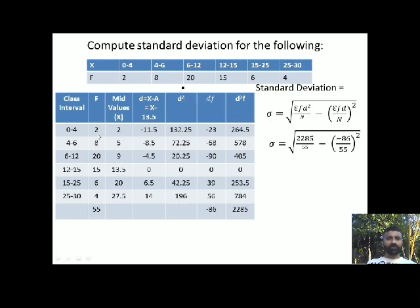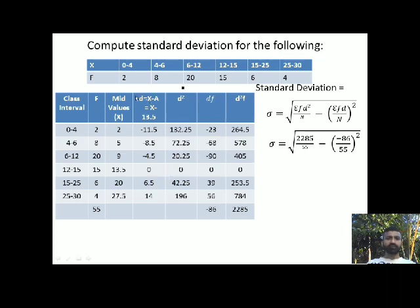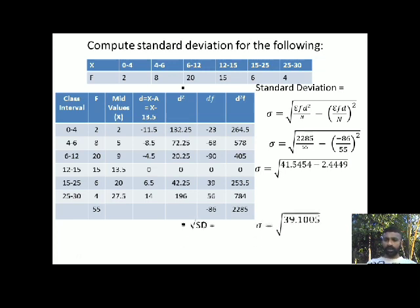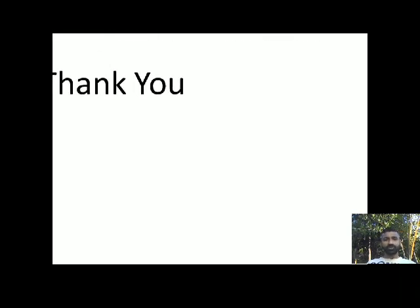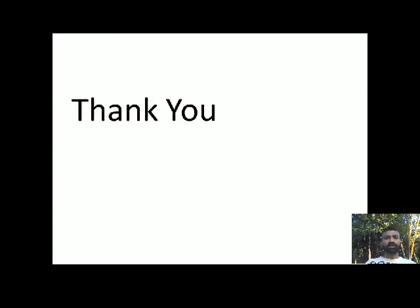For the fd squared column, multiplying d squared by the corresponding frequency: 132.25 into 2 is 264.5; 72.25 into 8 is 578. The total fd squared comes to 2285. Applying the formula: the square root of 2285 divided by 55, minus negative 86 by 55, whole square. Simplifying: square root of 41.5454 minus 2.4449, which is the square root of 39.1005. The standard deviation is 6.2530. I hope you have understood how to compute standard deviation under the deviation method. Thank you very much.